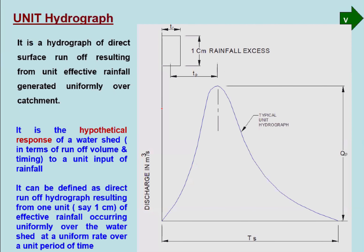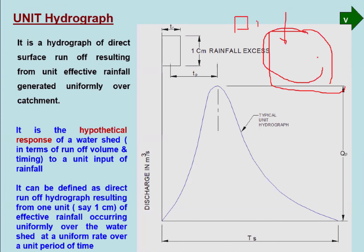The unit hydrograph is a hypothetical hydrograph. We assume no base flow, and there is unit rainfall (1 cm) of unit time (1 hour) over the complete catchment area. If there is 1 cm of rainfall for 1 hour over the complete catchment area, the resulting runoff at the point of interest is called the unit hydrograph. It is a hypothetical response with a rising limb and a falling limb.